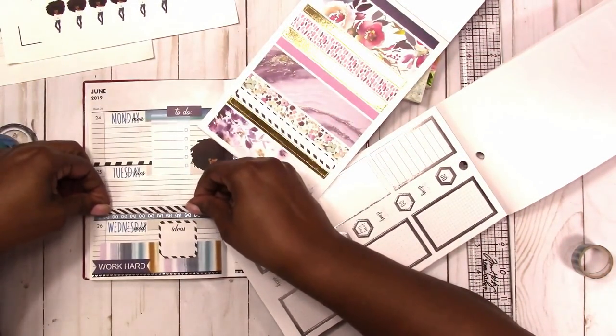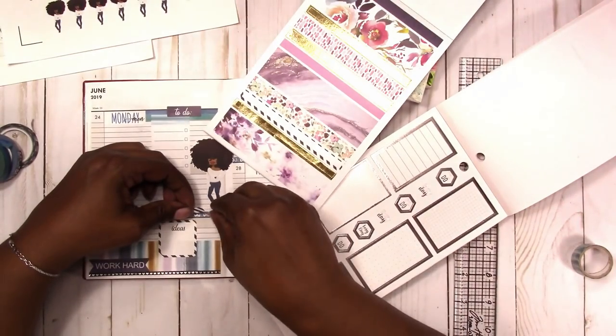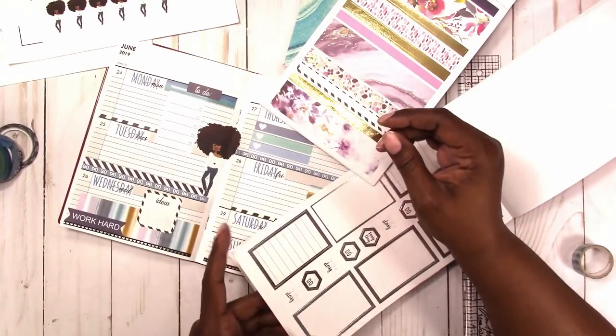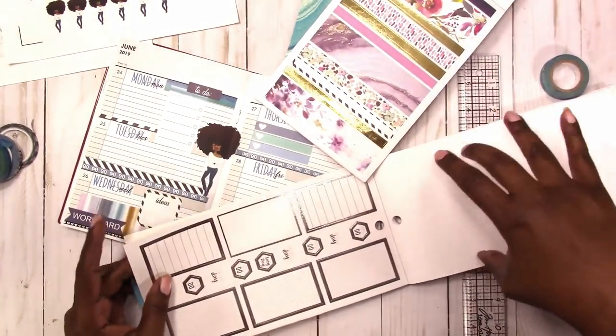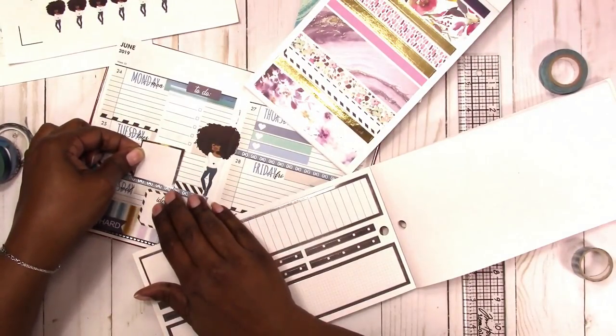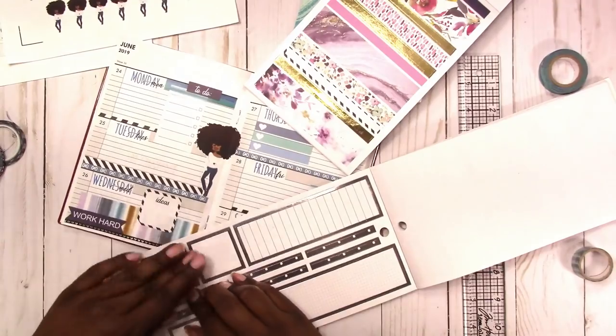Here is just a decorative strip from the Walmart book in black and white to tie in with the black and white washi that I used. And it also adds a little layering effect for the silver foil box that I'm going to use. And I decided not to use that one because it's a little too big. We're going for a smaller size.